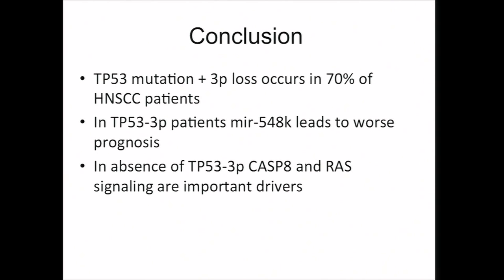In conclusion, we've shown that P53 mutation frequently co-occurs with 3P loss in the head and neck cohort, and this leads to worse prognosis — demonstrated in a couple of different cohorts as well as a pan-cancer cohort of about 4,000 patients. Among these patients, expression of MIR548K leads to worse prognosis, while in the absence of this common driver event, we see other pathways — caspase-8 and RAS signaling — that may be important drivers in this tissue.